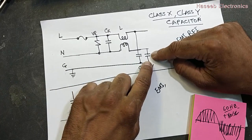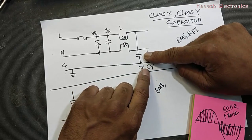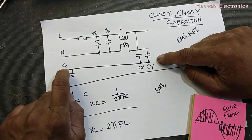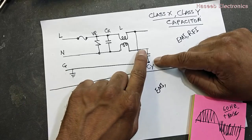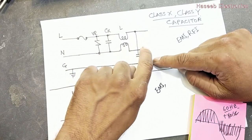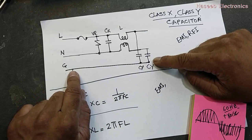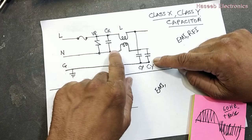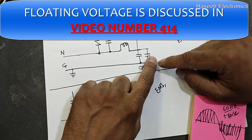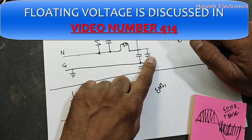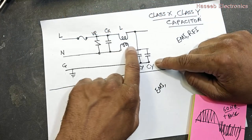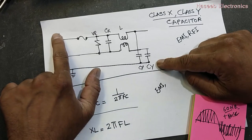If the Y capacitor is present and functioning, it removes the noise and sends it to ground — provided the third wire (ground) is connected. If it becomes short circuit, it produces floating voltage in the chassis. If it is not connected to a good earth, floating voltage can appear in the chassis. I discussed floating voltage in detail in another video available on my channel. So in both failure cases, these are safety capacitors — also called RFI/EMI suppression capacitors.